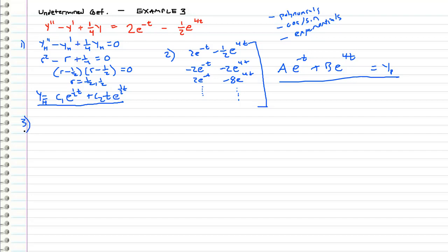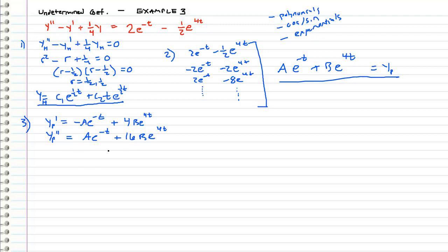Step 3: determine our undetermined coefficients. yp prime is equal to negative ae to the negative t plus 4be to the 4t. Differentiating one more time, yp double prime is ae to the negative t plus 16be to the 4t.